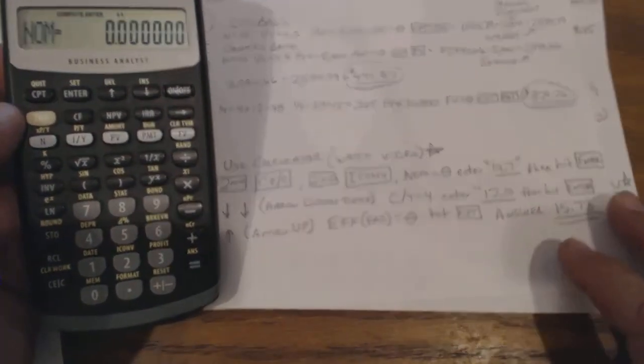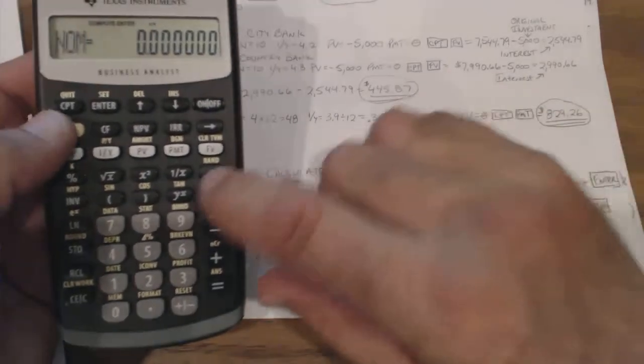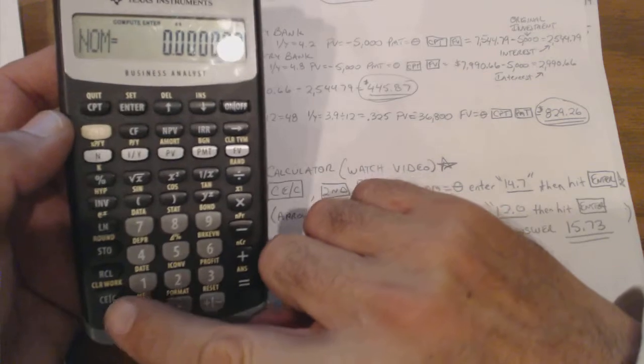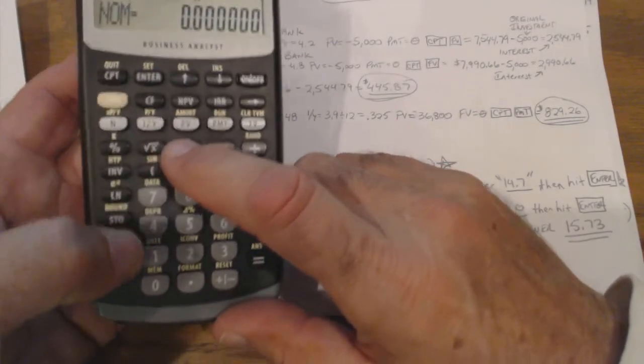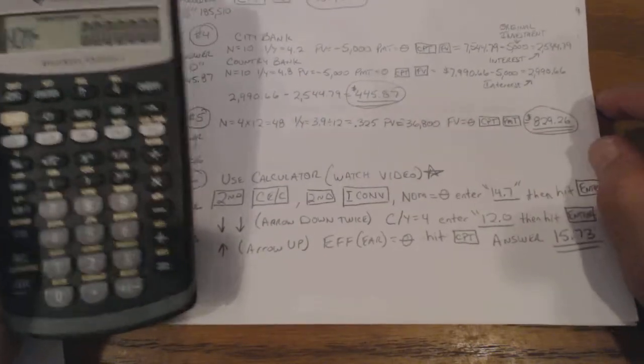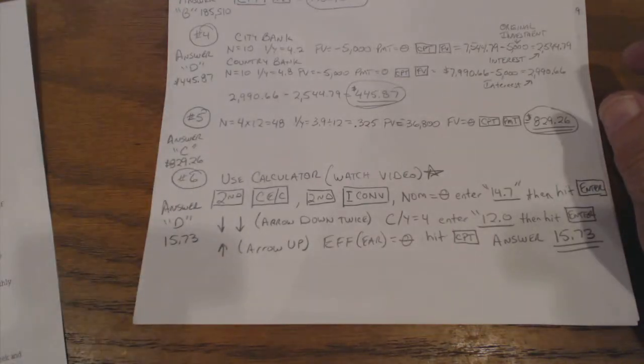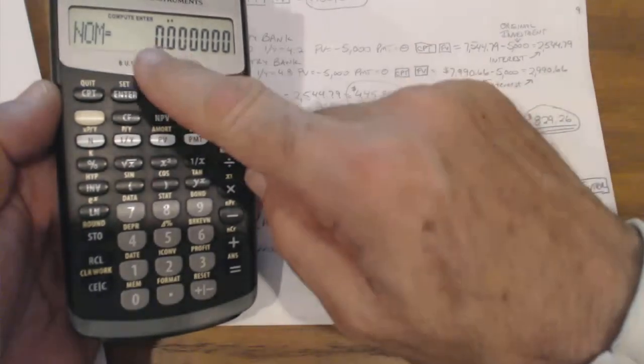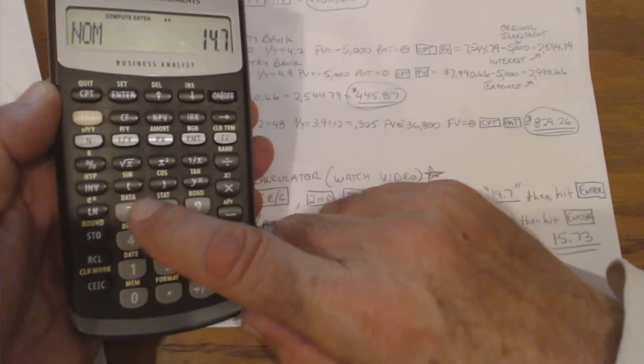It says enter your rate. You can actually hit Second CE once you get the interest conversion, then hit Second CE. It's kind of like hitting Second CF to get the cash flows. Then hit Second CE and that clears it. They're telling you that you have a 14.7% annual percentage rate. So that's the nominal rate. The nominal rate would be 14.7. That's what you want to convert. And then you've got to hit enter again.